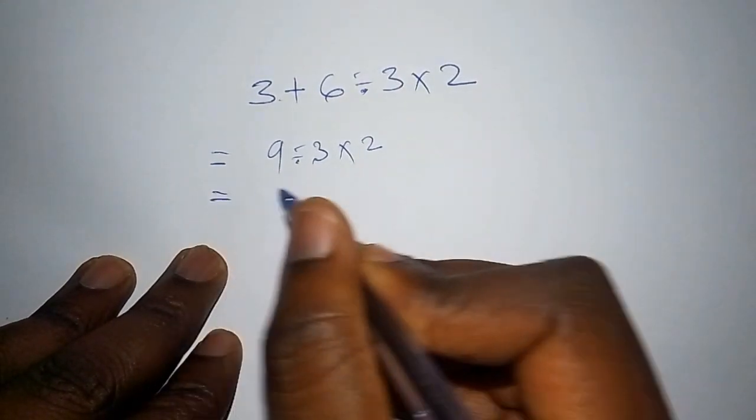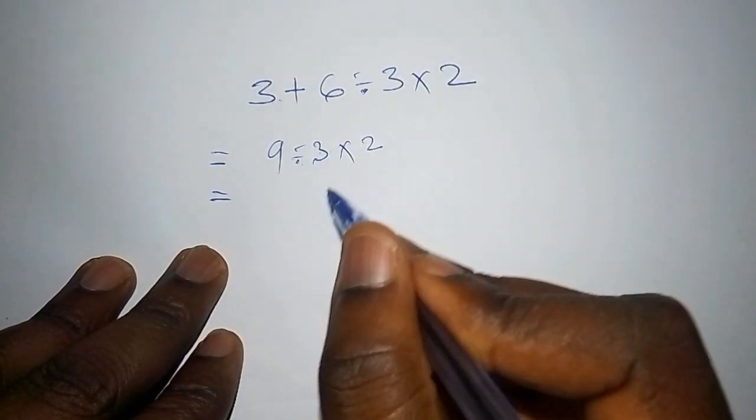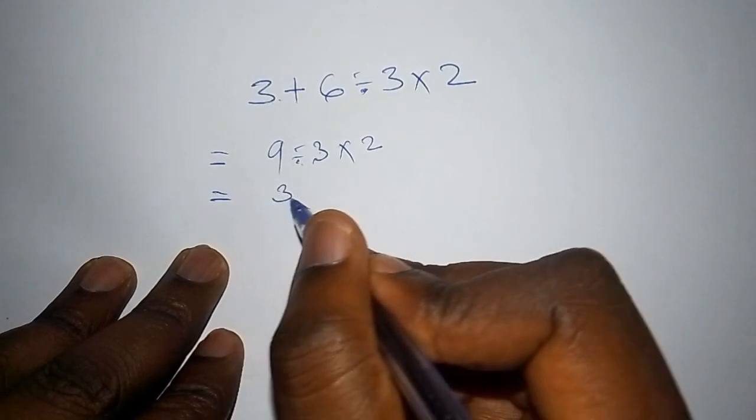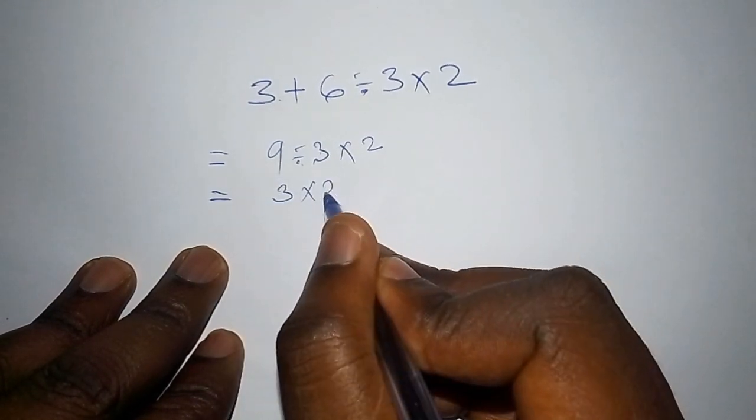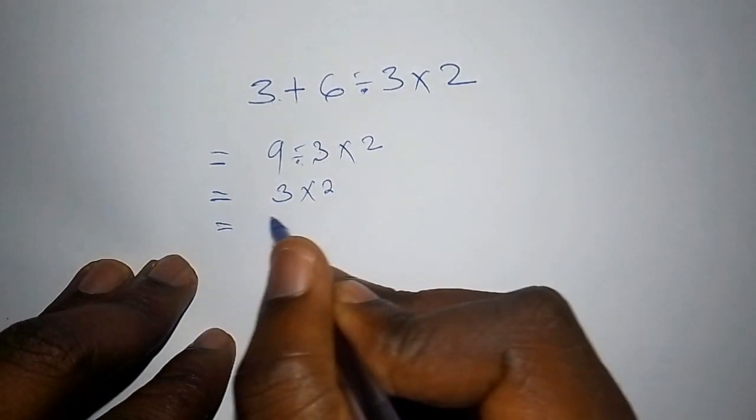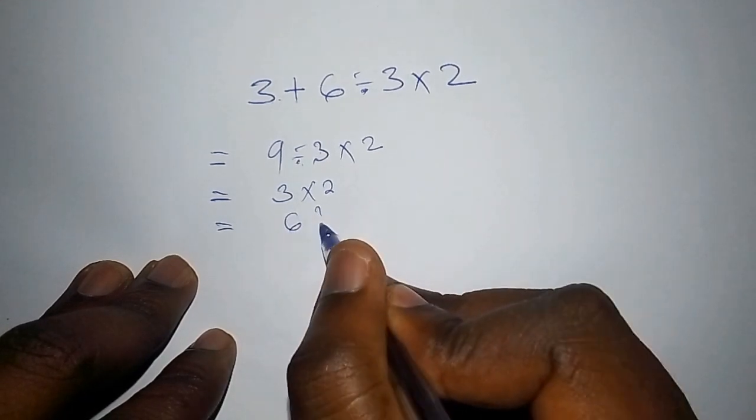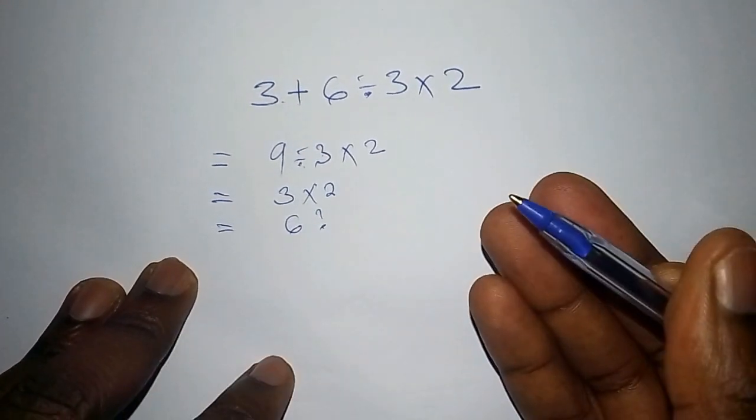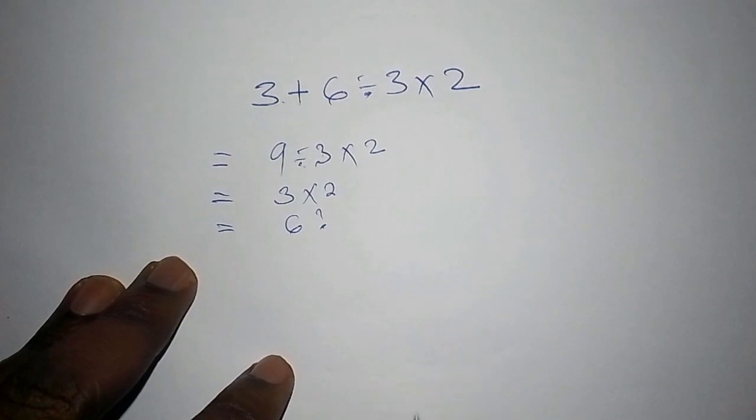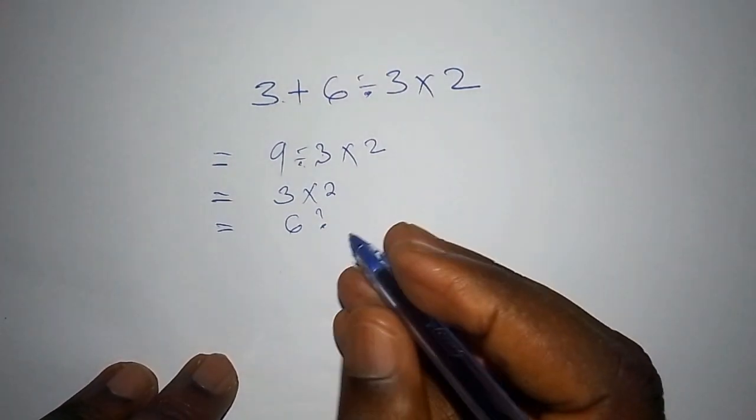The next step, they say, is 9 divided by 3, and they give the answer 3. Then from there they multiply by 2, and they say the correct answer is 6. Is this the correct answer? Maybe we don't know. Let us now work out the method that we know is the best method.